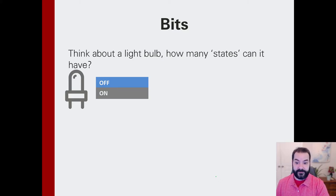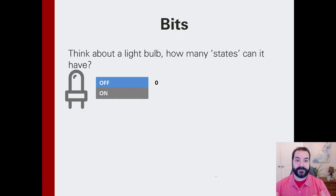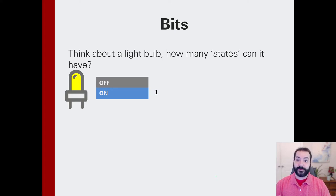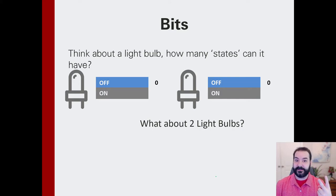If there's no electricity, the light is off — that's one state, and we consider that zero. But if I give it electricity, the light is on, and we count that as a one. So we have two possible states: one when the light is off, one when the light is on. What happens if I add a second LED light?